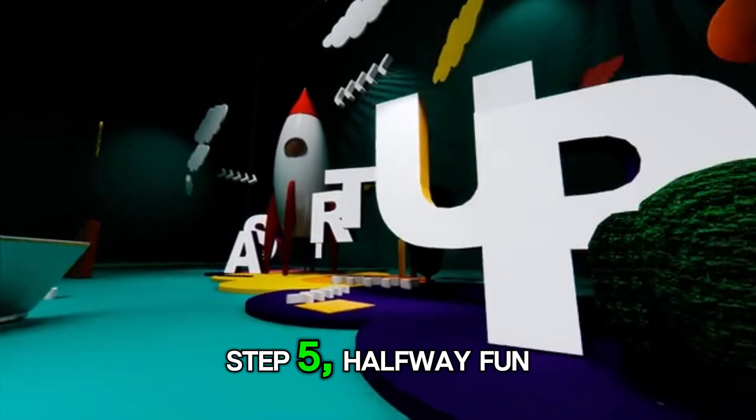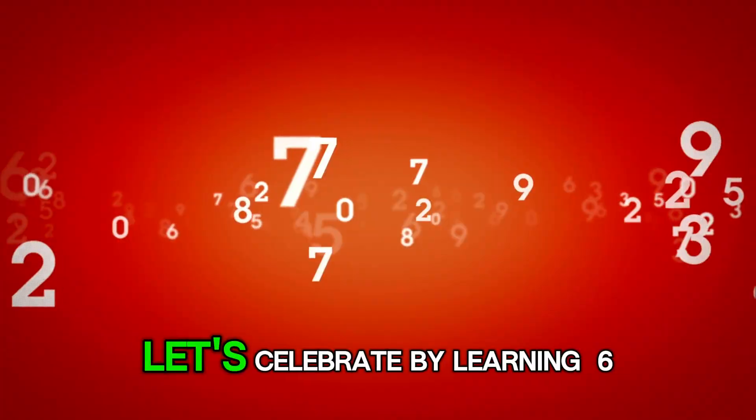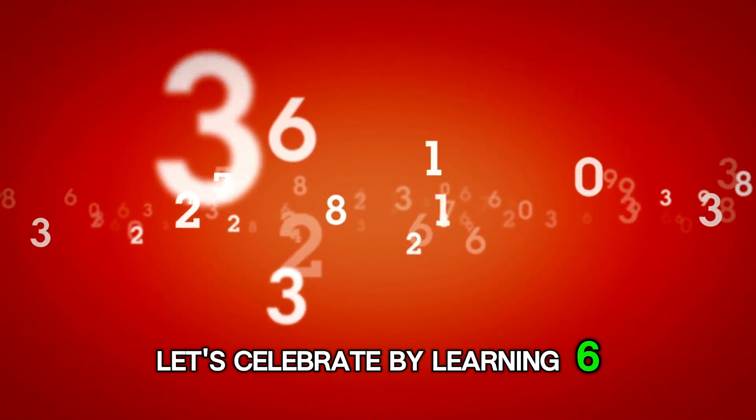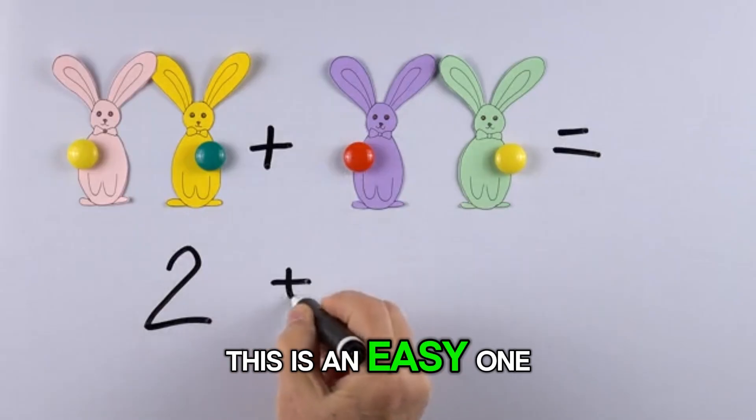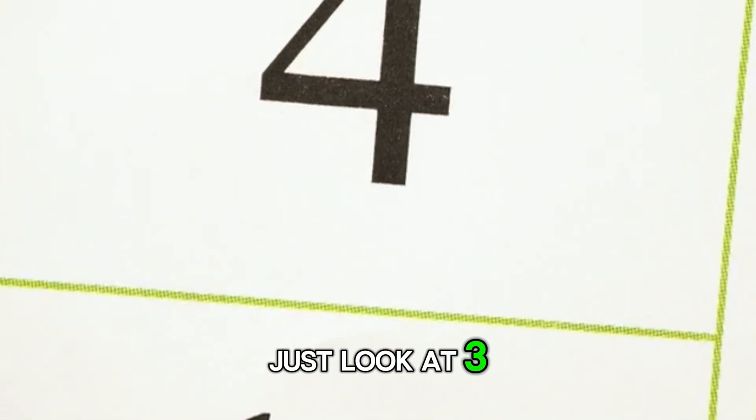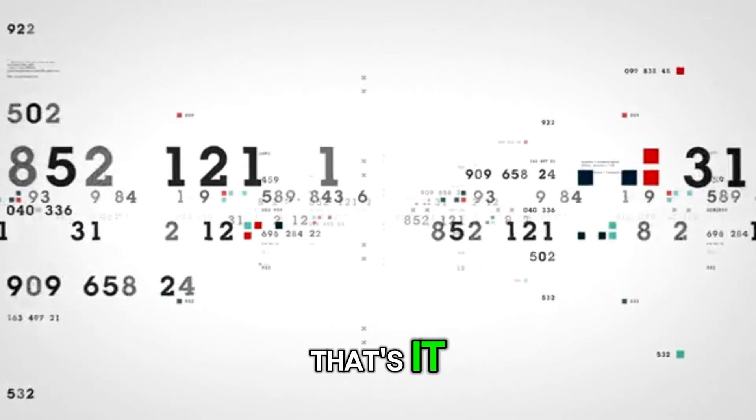Step 5. Halfway fun. We're halfway there. Let's celebrate by learning 6 times 5 equals 30. You did it. This is an easy one. Just look at 3. Just add a 0 to it. That's it.